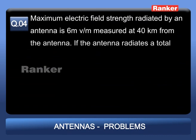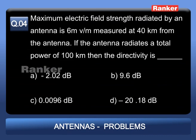Problem 4: Maximum electric field strength radiated by an antenna is 6 mV/m measured at 40 km. If the antenna radiates a total power of 100 kW, the directivity is: Option A: −2.02 dB; Option B: 9.6 dB; Option C: 0.0096 dB; Option D: −20.18 dB.